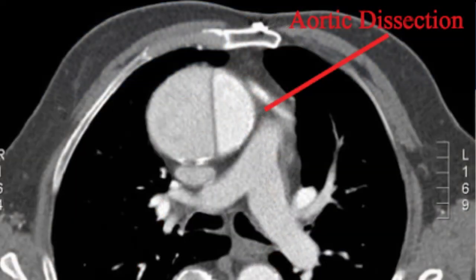Once the patient is diagnosed with a type A dissection — through a combination of physical findings, signs and symptoms, and diagnostic tests, the most common being a CT scan — cardiac surgery is notified. If it's a type A dissection involving the ascending aorta, oftentimes the patient will go right to the operating room.